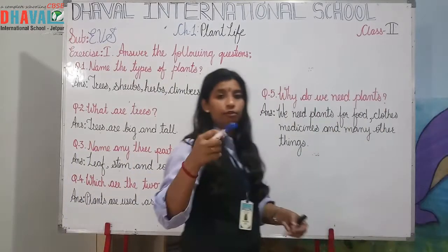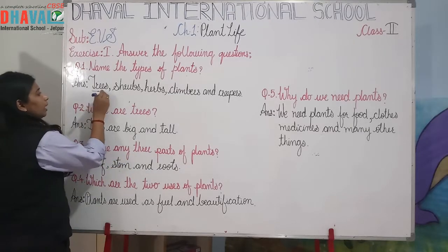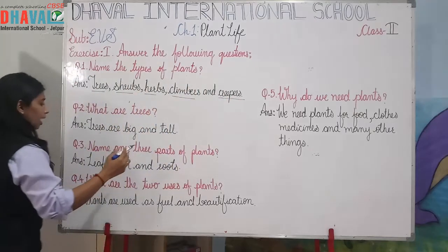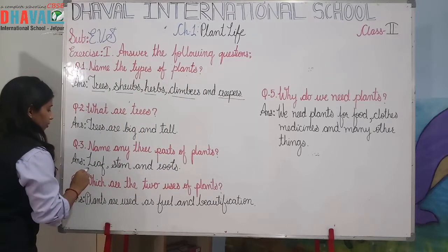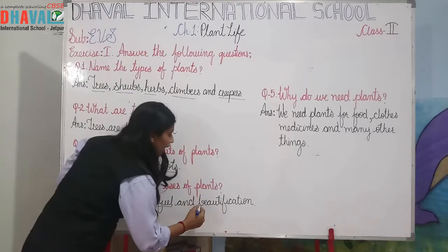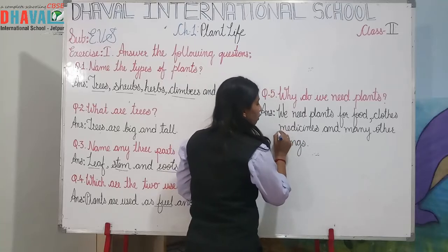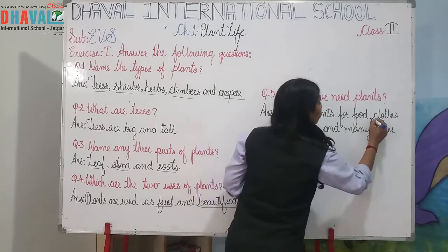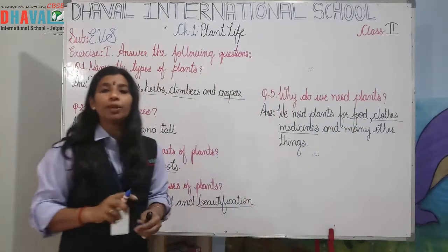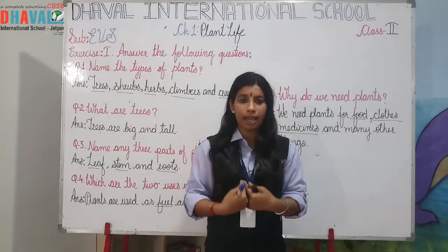Some hard words from these questions that you can practice at home: trees, shrubs, hops, climbers, creepers, leaves, stems, roots, fuel, beautification, medicines, clothes, food. You can write them in your rough book 5 to 10 times and then learn them by heart.